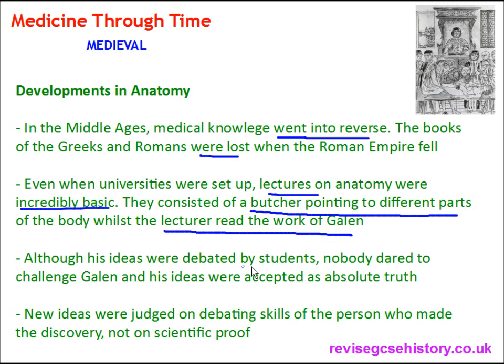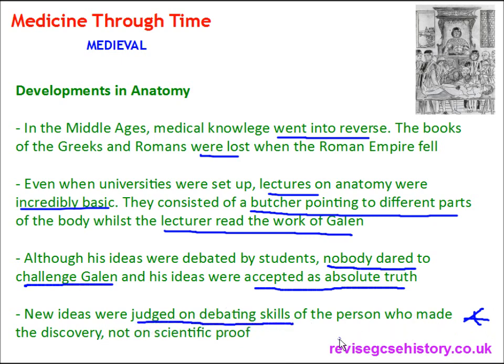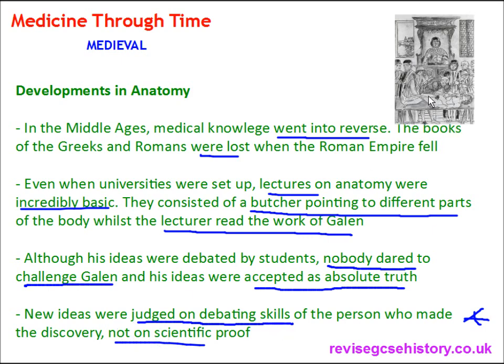Nobody dared to challenge Galen and his ideas were accepted as absolute truth. New ideas were judged on the debating skills of the person who made the discovery, not on scientific proof. So if someone had made an amazing discovery with lots of scientific proof to back it up but weren't very good at debating, their idea wouldn't be put into practice. But if someone was amazing at debating and had a rubbish idea based on no scientific proof, their idea would be put into practice.